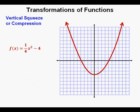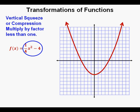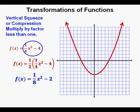Now we'll look at a vertical squeeze or compression. For a vertical squeeze, compress, or shrink, we multiply the entire right side of the function by a factor less than 1. Multiplying by 1 half gives, simplified, f of x equals 1 eighth x squared minus 2. Here it is graphed — we see it squeezed vertically from the original.